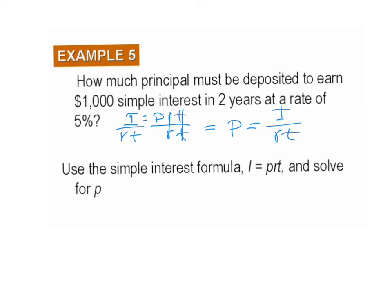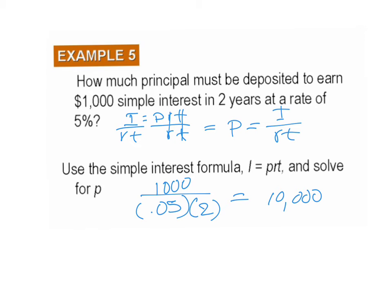So we would write 1,000 — that's the interest that we want — divided by 0.05, that's our rate, times the number of years, two. What does that equal? It equals $10,000. That's the amount of principal we need to earn $1,000 in two years at 5%. Please get that down and we will go on to the next slide.